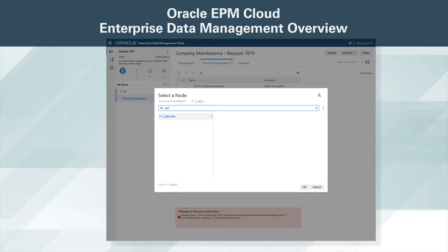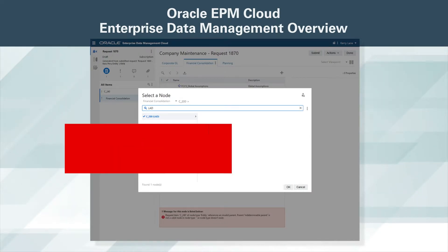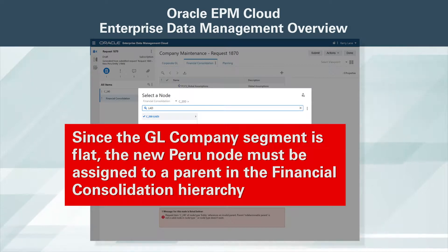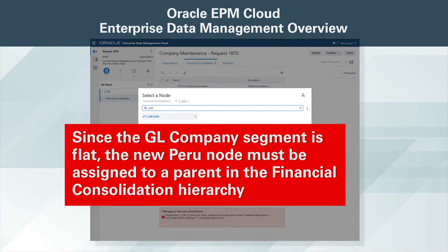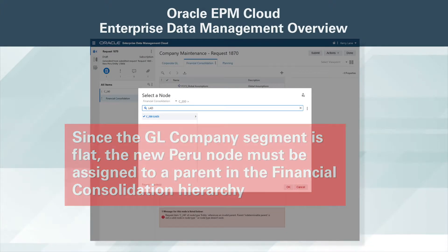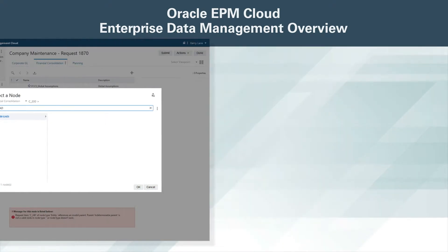The validation message alerts me of an invalid parent. Since the GL company segment is flat, the new Peru node must be assigned to a parent in the financial consolidation hierarchy. I will assign Peru to LAD and submit the request.